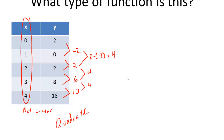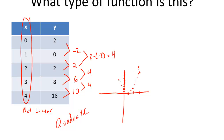If we were to put this on a graph, you would see: at x equals 0, y is 2; at 1, y is 0; at 2, y is 2; at 3, y is 8 — and you'll see that we get a quadratic. Sure enough, it is a quadratic function.